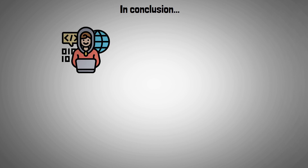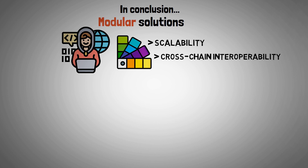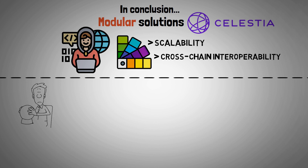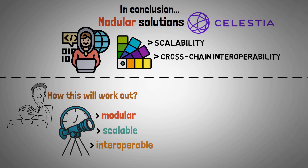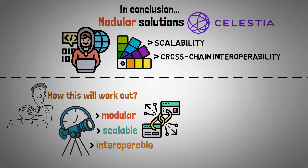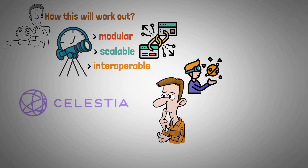In conclusion, blockchain developers have a wide range of options for scalability and cross-chain interoperability, thanks to modular solutions like Celestia. The real test, however, would be to see how all of this actually works out. We believe that the future will involve a variety of modular, scalable, and interoperable purpose-specific chains. It will be interesting to watch what happens as Celestia approaches mainnet and developers begin to use it.